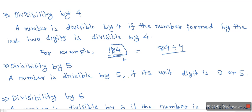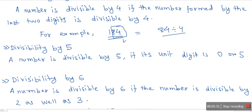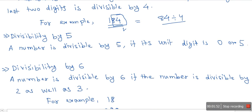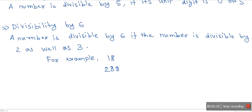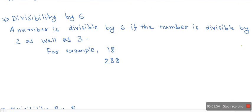Now, the test of divisibility of a number by 5 is very simple: if the unit digit is 0 or 5, then the number is divisible by 5.